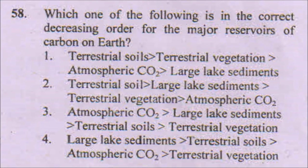The next question asks for the correct sequence of carbon reservoirs on Earth in decreasing order. The answer is number four. The largest reservoirs are marine sediments — including coral reefs, which are made of calcium carbonate — these sediments absorb CO2 from their layer and the waste materials deposited form lag sediments. Then come terrestrial soil, atmosphere CO2, and terrestrial vegetation.